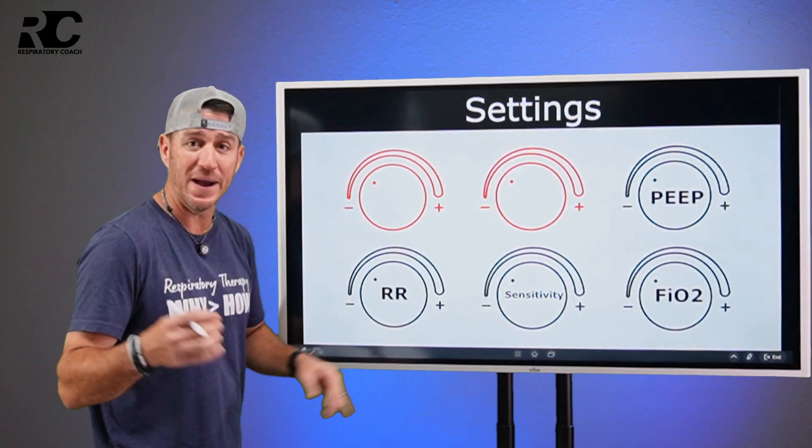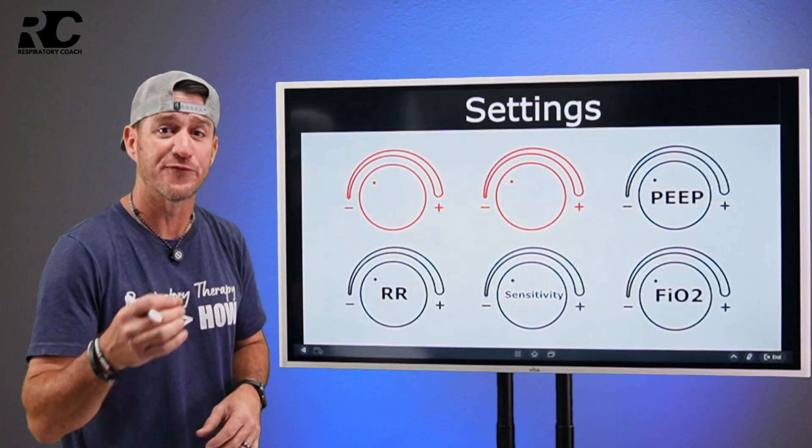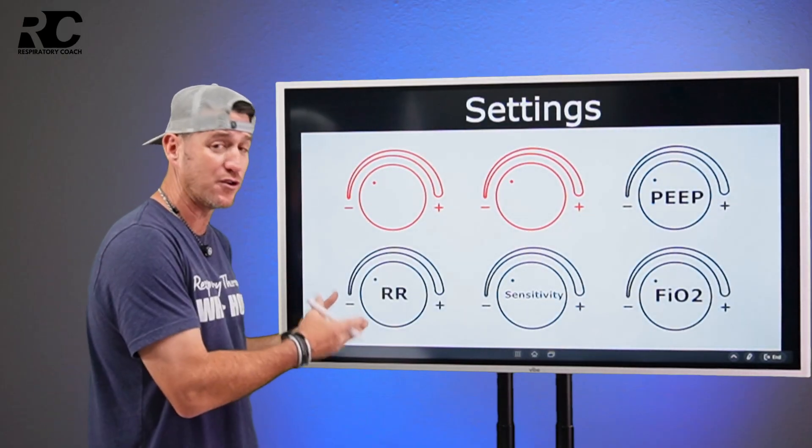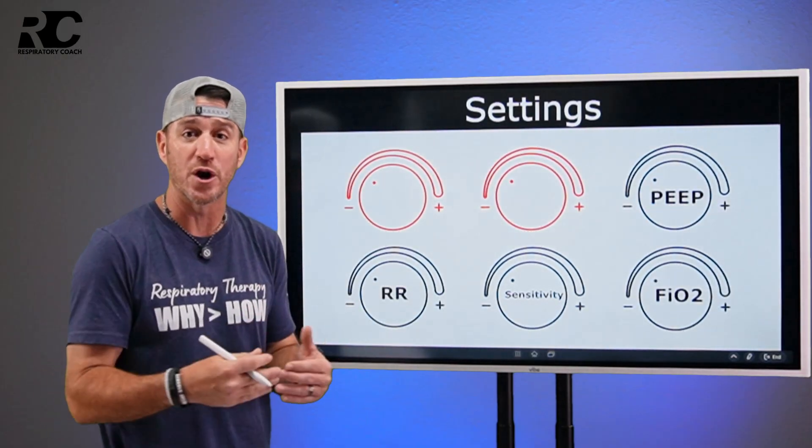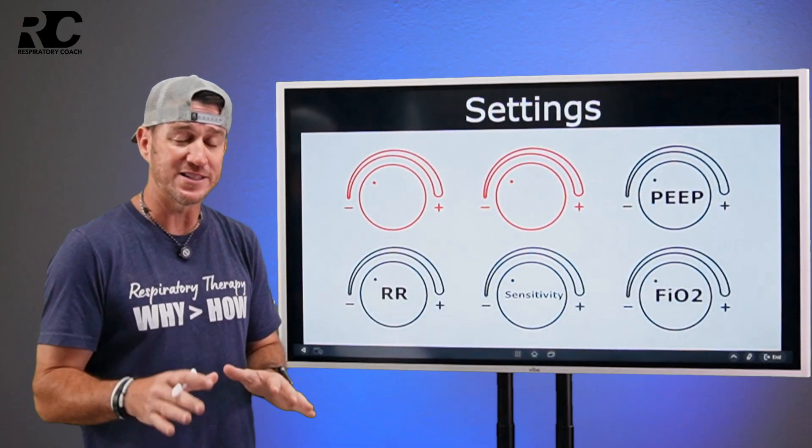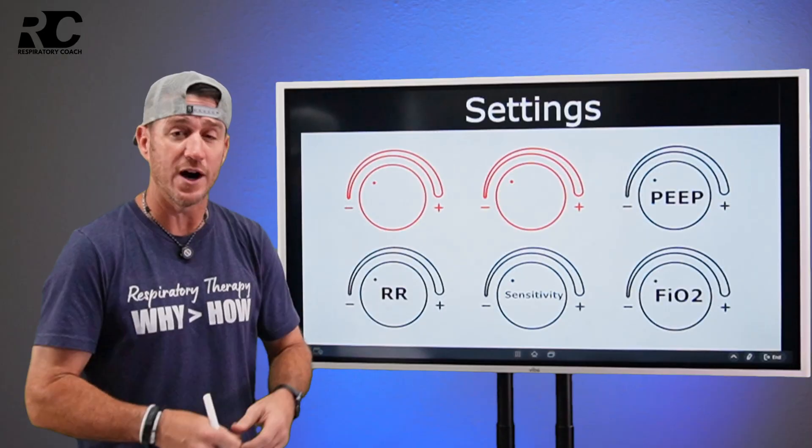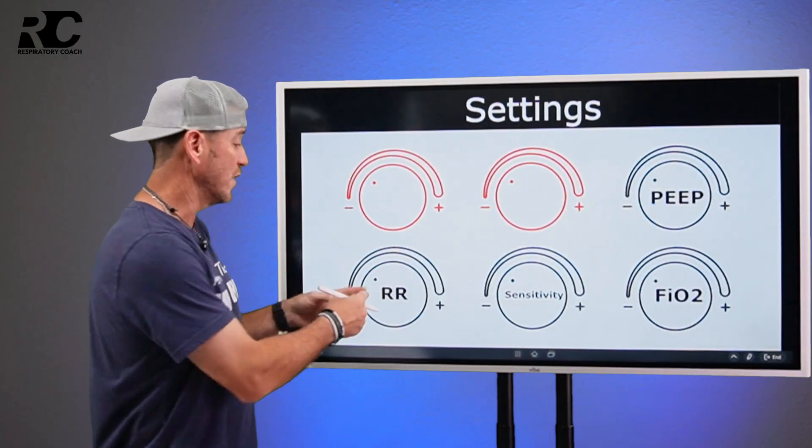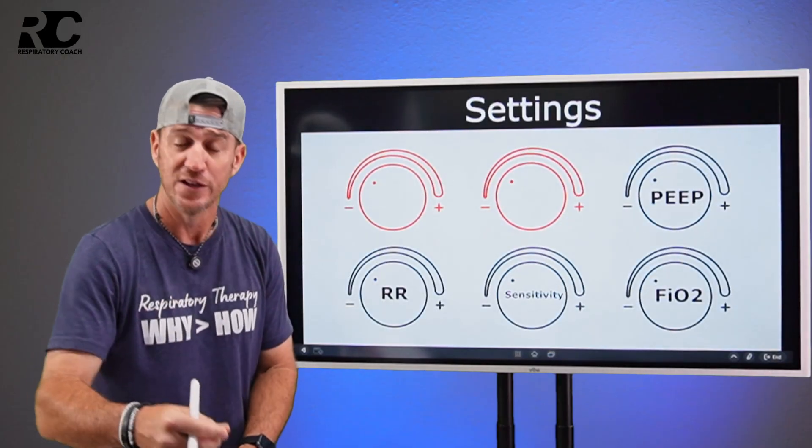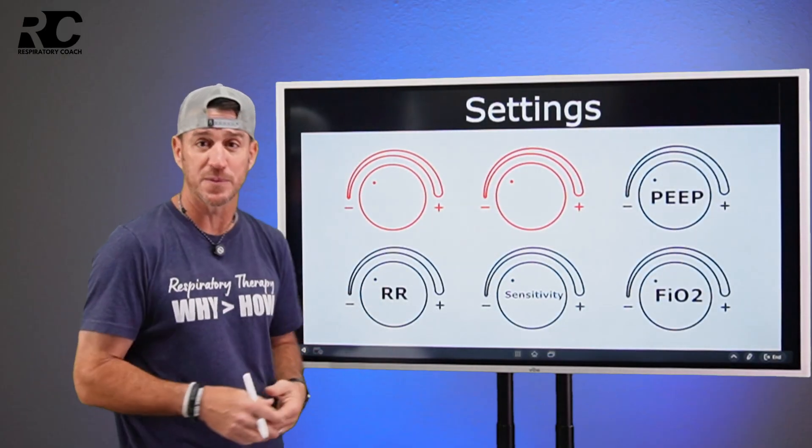Respiratory rate. You might also see this as frequency. And all this means is how many breaths is the ventilator going to deliver per minute? That's all we're talking about. You're going to tell the ventilator what to do on inspiration. And then the respiratory rate is what's going to tell it how often to do it. So if you set it on 10 breaths per minute...